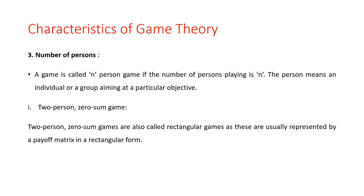Two-person zero-sum games are called rectangular games as they are usually represented by a payoff matrix in rectangular form. A game with only two players — player A and player B — is called a two-person zero-sum game problem. If the losses of one player are equivalent to the gains of the other, the sum of their gains is zero, which is why this problem is called a two-person zero-sum game.